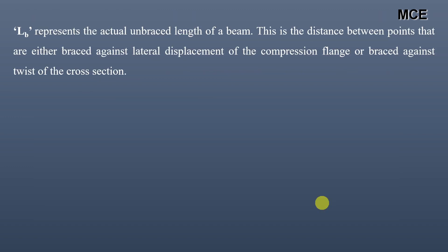There are also some important definitions related to the length of a beam. First is LB, which represents the actual unbraced length of a beam. This is the distance between points that are either braced against lateral displacement of the compression flange or braced against twist of the cross section.